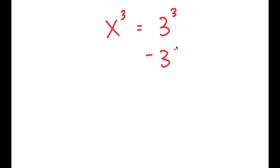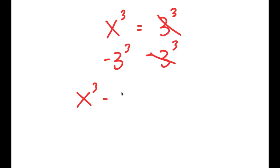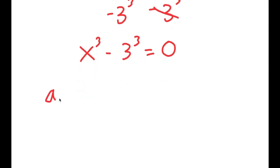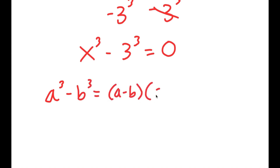To solve this, I'm going to first start by subtracting 3 to the power of 3 on both sides. So now I get x to the power of 3 minus 3 to the power of 3 is equal to 0. Now from here, if I have something in the form a to the power of 3 minus b to the power of 3, this is equal to a minus b times a squared plus ab plus b squared.